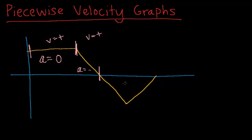Now, if we look between this marker and this marker, acceleration is still negative. In fact, it's the exact same as it was before because the slope is the same. However, velocity is now negative as well.